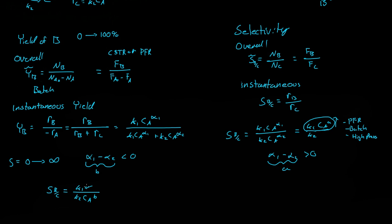So what kinds of systems can we use to keep the concentration of A low? A CSTR automatically dilutes A — if you put A at a high concentration into a CSTR, you're automatically diluting it. So CSTRs are good to use when alpha 1 minus alpha 2 is a negative number. You can also add inerts or use low pressure to achieve a lower concentration of A.